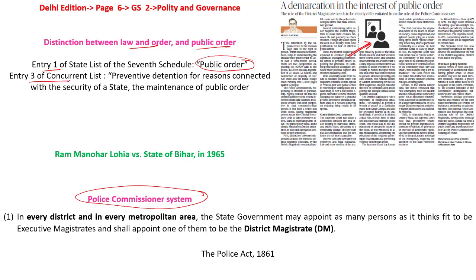Entry 3 of the concurrent list also speaks about preventive detention for reasons connected with the security of a state and the maintenance of public order. This also means the central government would be able to make laws when it comes to public order. The question is: what is public order and what is its difference from law and order?